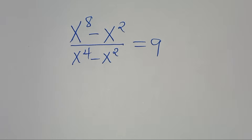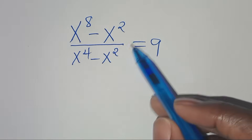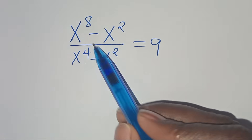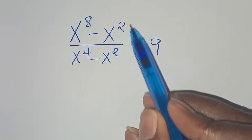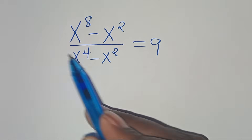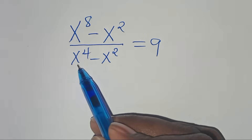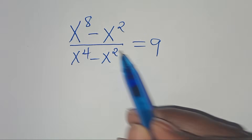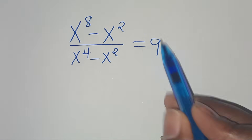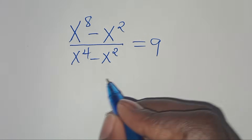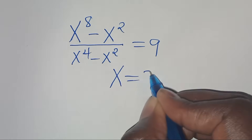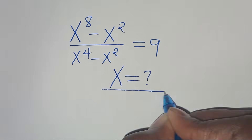Hello everyone, you are welcome to solve this nice algebra problem: x to the power of 8 minus x to the power of 2, divided by x to the power of 4 minus x to the power of 2, equals 9. What is the value of x?